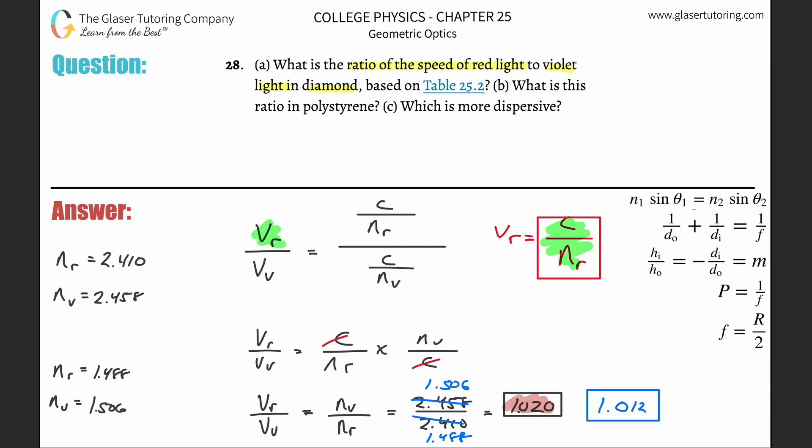Well, this is a larger difference between the velocities. So therefore, the diamond is going to be more dispersive. Diamond.